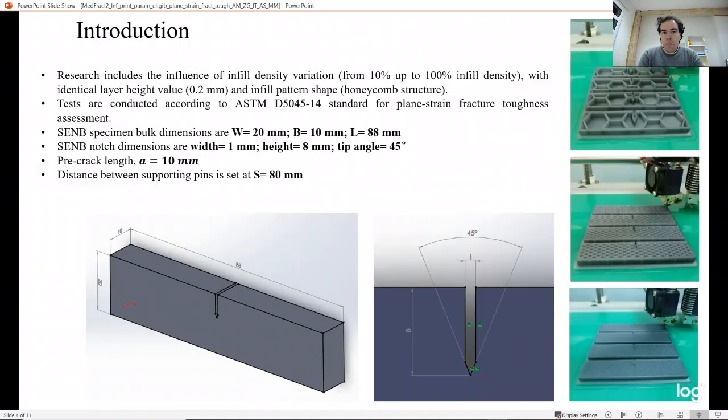That's how we arranged our testing. We used SENB specimens for plane strain fracture toughness testing of PLA material. Our specimens have variation in infill density, so we wanted to see how infill density influences the mechanical properties. We used specimen batches from 10% to 100% infill density with a 10% increment. Because of the vast number of specimens needed, we used the same layer height set at 0.2 mm and the same infill pattern shape, which is honeycomb, in all specimens.